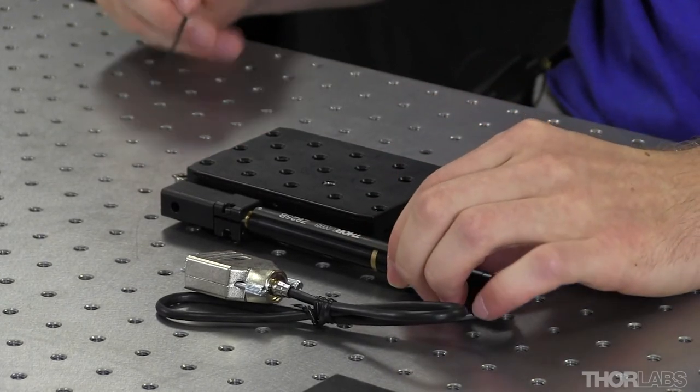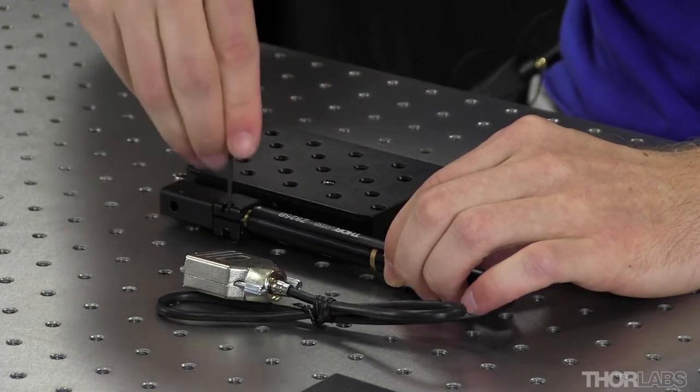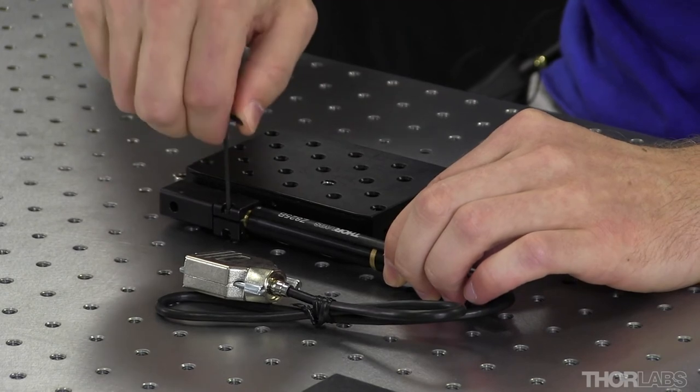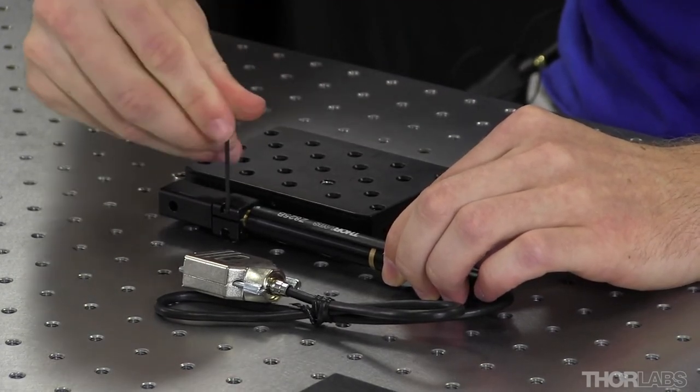After the actuator has been inserted into the barrel clamp, we can tighten down on that cap screw locking it inside the barrel clamp and making sure it's again snug but not over tightened. And now we have a one inch travel cross roller bearing motorized translation stage.